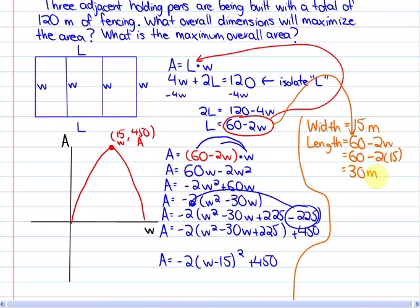And finally in answer to the last question, what is the maximum overall area? The maximum overall area is, as we can see again from the vertex, 450 meters squared.